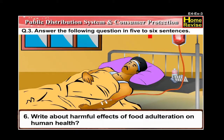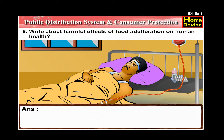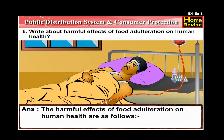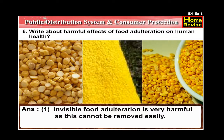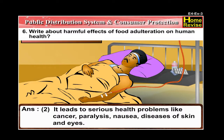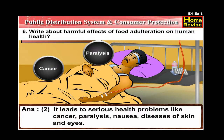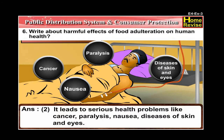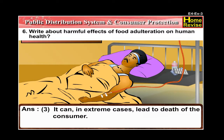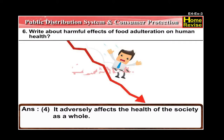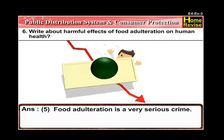Number 6: Write about the harmful effects of food adulteration on human health. The answer is — number one, invisible food adulteration is very harmful as it cannot be removed easily; number two, it leads to serious health problems like cancer, paralysis, nausea, and diseases of the skin and eyes; number three, it can in extreme cases lead to the death of the consumer; number four, it adversely affects the health of society as a whole; and number five, food adulteration is a very serious crime.